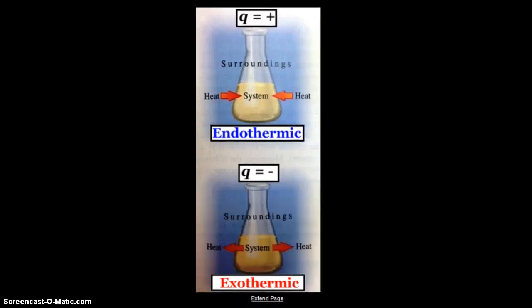When heat is going into the system from the surroundings, we have an endothermic situation, and the Q value is positive. When heat is going from the system to the surroundings—when heat is exiting the system—we have an exothermic situation, and our Q value is negative. Make sure you understand: Q is positive for endothermic, Q is negative for exothermic.